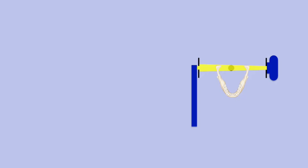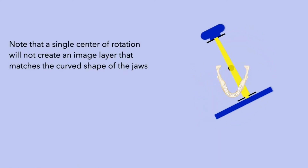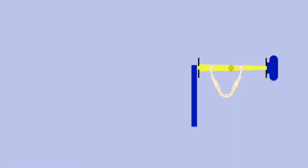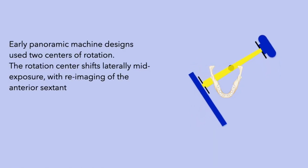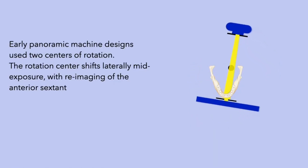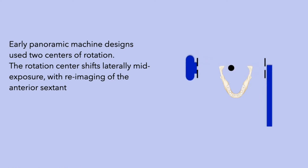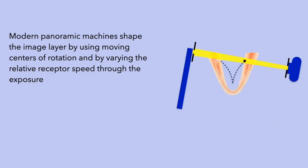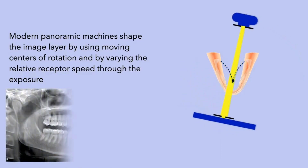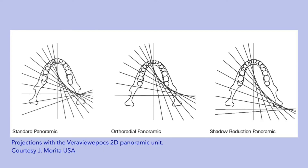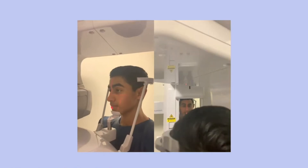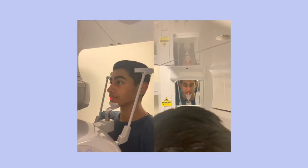Next, let's apply these principles to imaging the jaws. Note that a single center of rotation does not create an image layer that matches the curved shape of the jaws. Early designs of panoramic machines used two centers of rotation. The first imaging arc encompassed the condyle through the canine of the contralateral side, and the rotation center would then shift laterally with re-imaging of the anterior sextant and the contralateral jaw. Modern panoramic machines shape the image layer using moving centers of rotation and by varying the relative receptor speed through the exposure cycle. Many manufacturers offer options for different image layers to accommodate jaws of varying shapes and sizes. To facilitate patient positioning into the image layer, panoramic machines are equipped with laser lights that guide patient positioning.